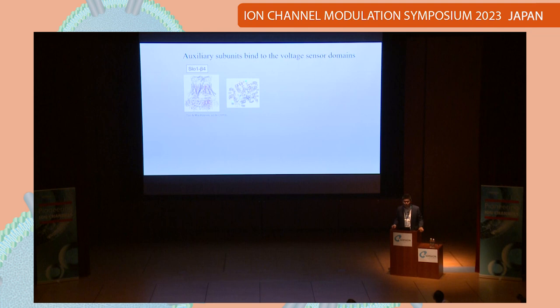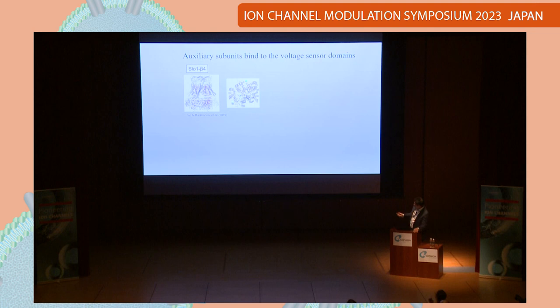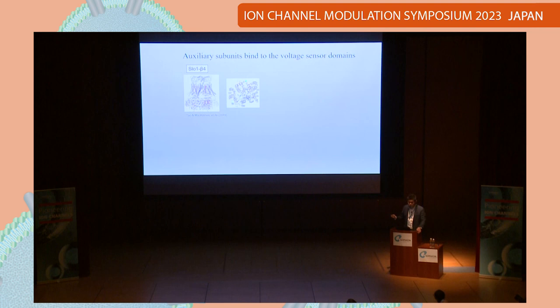Thanks to the recent advancement of cryo-EM structural biology, we now have structures of many voltage-gated potassium channel complexes. This is one example — the Kv1 channel with a beta subunit, colored in blue, which binds to the pore domain, or S6, and simultaneously binds to S1 or S0, so it binds to the voltage-sensing domain.